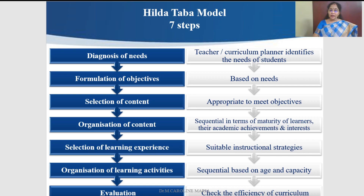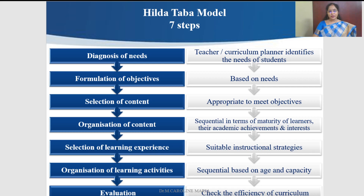First of all, we need to diagnose the needs of the students. For example, for a group of students aspiring to become teachers, we need to diagnose their needs — whether students aspire to become teachers or not. After diagnosing the needs, the curriculum planner should check what the specific needs of the students are. If students say they want to become an inspiring or effective teacher, what inputs need to be given? That is the formulation of objectives — based upon the needs of the students, the aims or learning outcomes of the course should be decided.